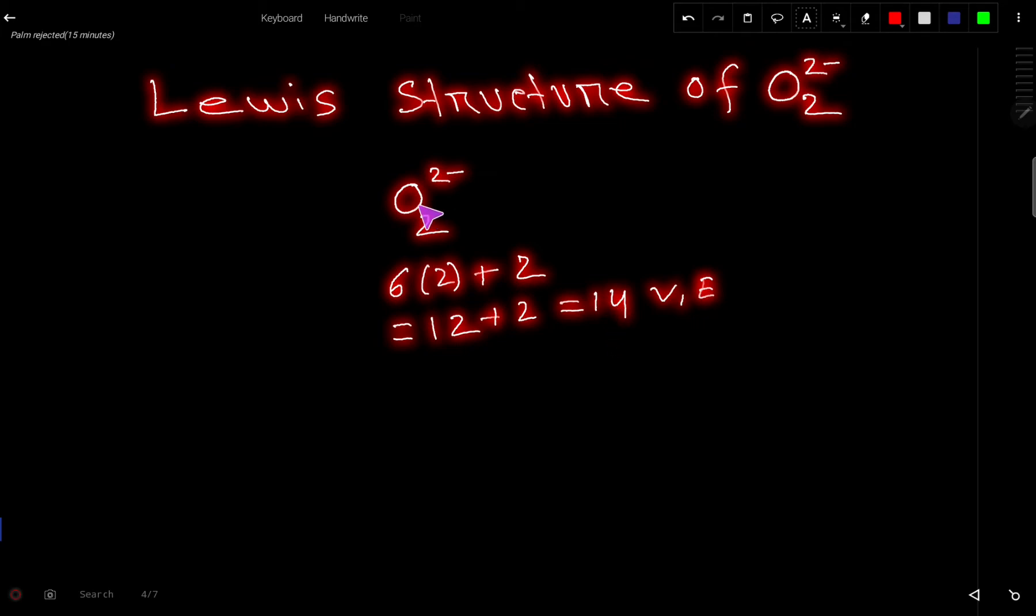The first task is to connect these two atoms together, and the second task is to satisfy the octet for both oxygens. So let us do that. Let us connect these two atoms together first.